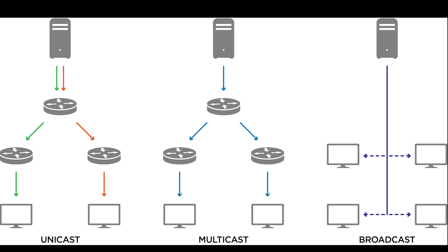In a multicast IP network, the content sender only needs to deliver a single stream and the nodes along that network will replicate the stream across the entire network. Any IP packet sent to a multicast address is delivered to only those hosts that have joined that particular IP multicast group, resulting in less traffic, thereby reducing bandwidth and network overhead.